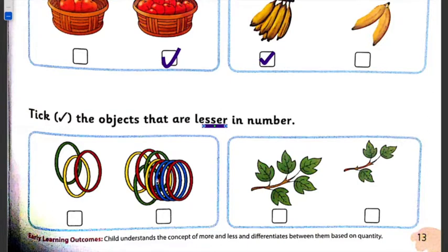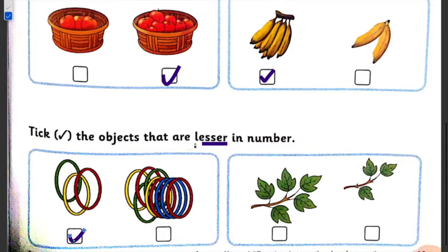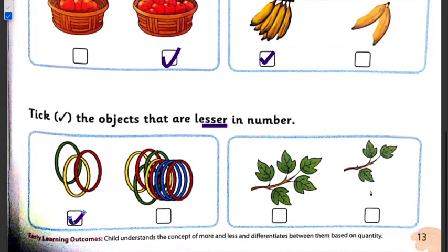When we talk about lesser in number, students, we look at quantity — which is less. Now suppose we look at this one — students, the quantity could be based on big or small, you have to see the size and quantity. If they have asked more, you tick more, but what they have asked here is the lesser number, so you will tick that.